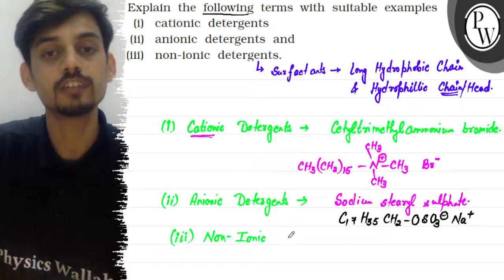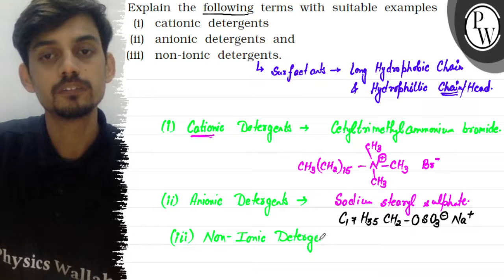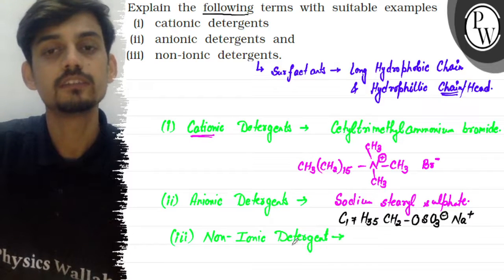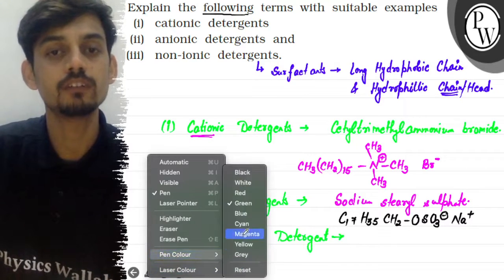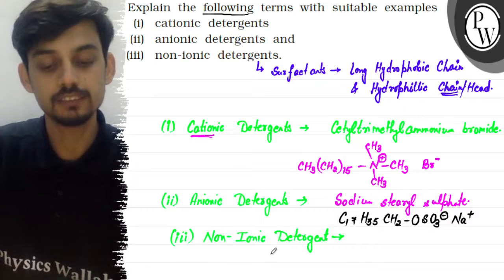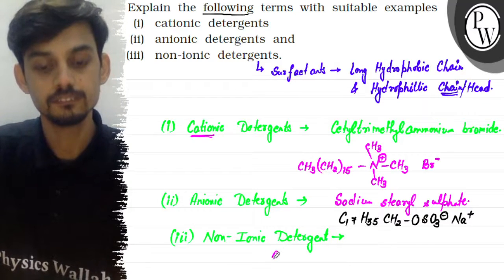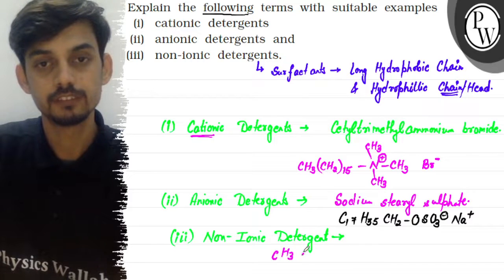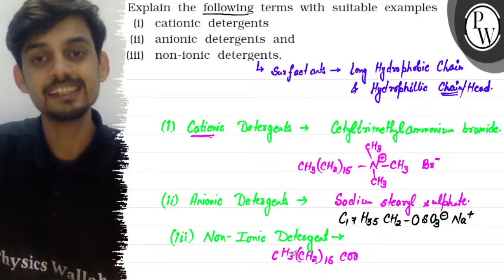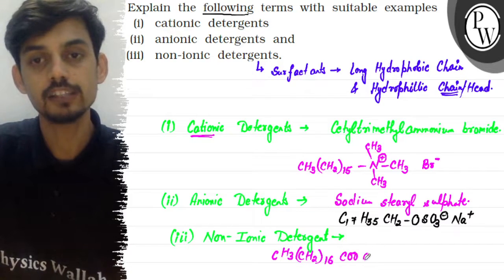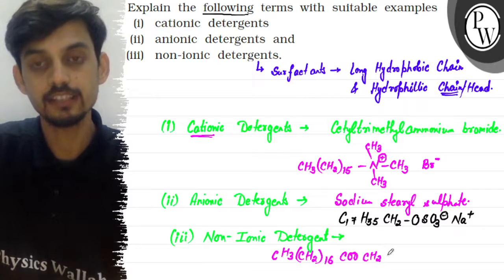For non-ionic detergents, the hydrophobic chain head is net neutral — it has no charge. These are mainly esters which are polymeric, combined with an alcohol chain. A common non-ionic detergent is stearic acid — CH3(CH2)16COO — combined with polyethylene glycol.